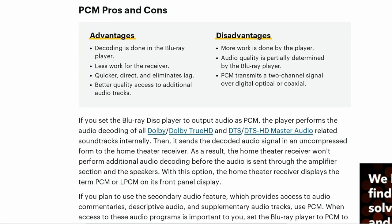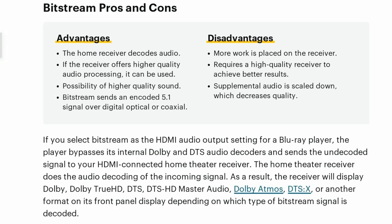Basically, PCM will do the decoding in-house; Bitstream will send the decoding to the amplifier, which will then do the decoding. So if your amplifier has better decoders built in — like newer HD formats — you want the amplifier to do it. Pros of Bitstream: the home receiver decodes the audio, and if the receiver offers newer quality decoders like Dolby Atmos, there's the possibility of higher quality sound. Bitstream sends an encoded 5.1 channel signal over digital optical or coaxial cable. Disadvantages: more work is placed on the receiver, requiring a higher quality amplifier. Also, supplemental audio is scaled down — you can lose the two-channel extra commentary audio on some tracks, which PCM can separate but Bitstream won't. If you select Bitstream and wire it up to, say, a PS4 and cinema system, the amplifier will display DTS audio or Dolby on screen.